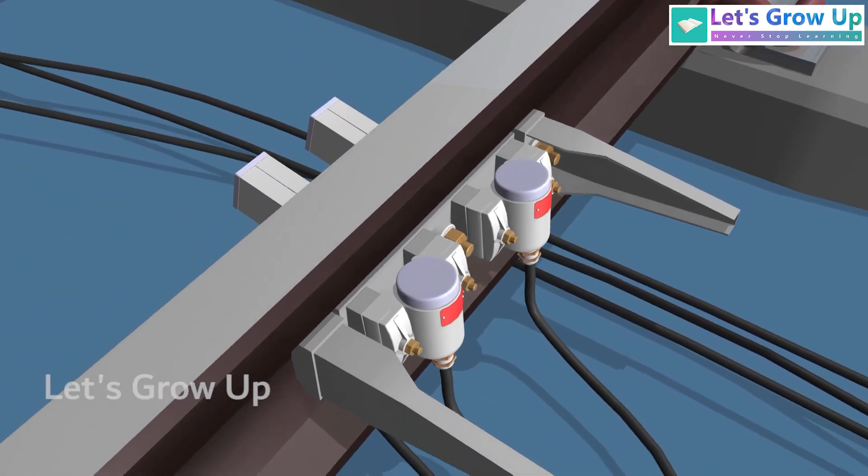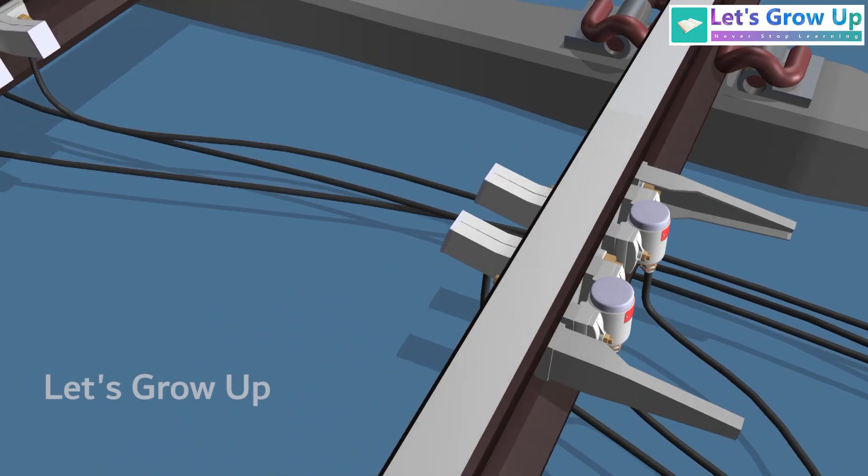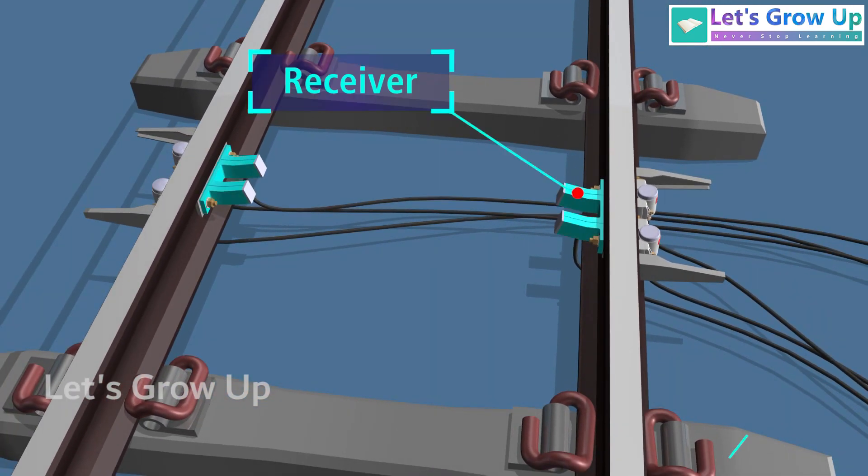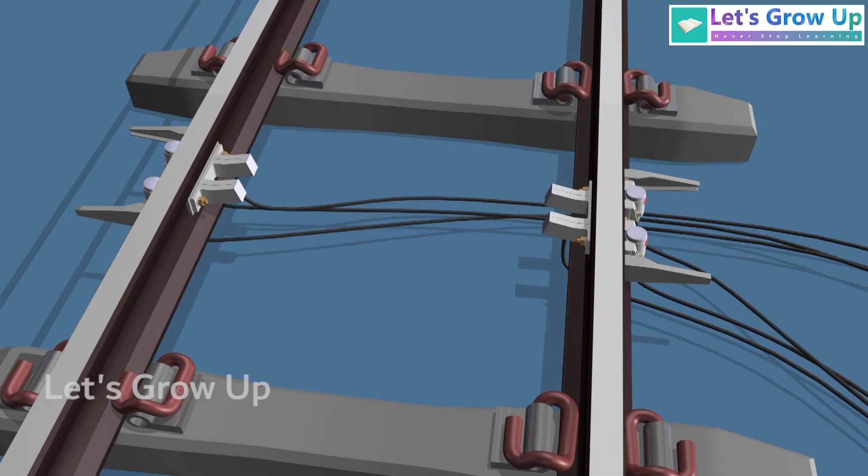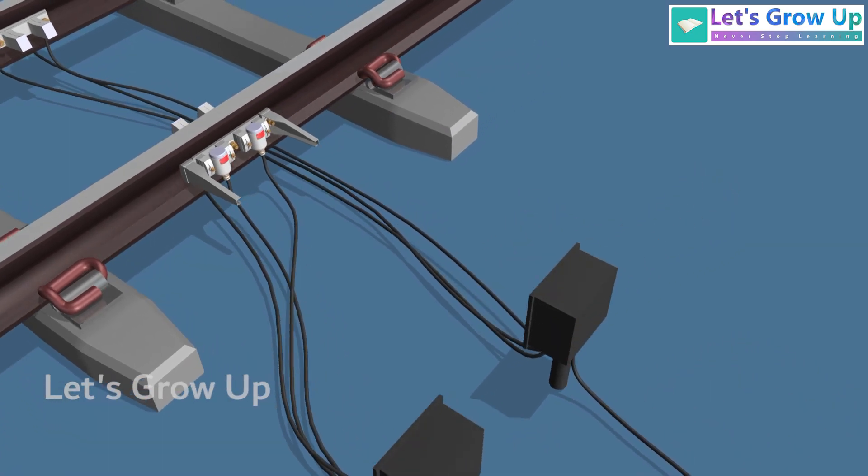The transmitter housing is fixed to the base on the outer side of the rail, while the receiver housing is mounted on the inner side. The transmitter heads and receiving heads are connected with a junction box via cables, ultimately linked to the evaluator box.